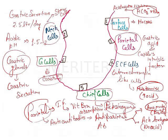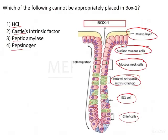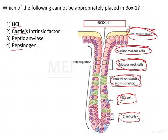To summarize the cells of the gastric gland: chief cells are there, ECL cells (enterochromaffin-like cells) are there, parietal cells secrete HCl and intrinsic factor, mucus neck cells provide housing for stem cells, and the mucus layer is formed by surface mucus cells.